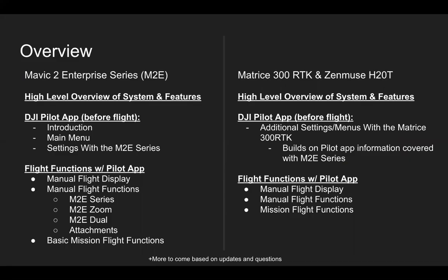In this course, just to give you an overview, first we're going to be covering the Mavic 2 Enterprise series and then going into the Matrice 300 RTK with the Zenmuse H20 and H20T. We'll take a high-level overview of the Mavic 2 Enterprise first, then go into the DJI Pilot app and talk about what it is, what you need to know before flying, and then all the different functions you'll see in flight with the DJI Pilot app and that specific system.